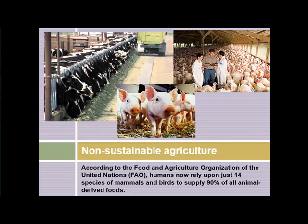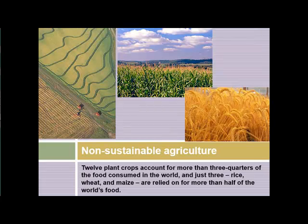This concentration of plant and animal dietary items means that just 14 species of animals and birds supply 90% of the human diet of animal-derived foods. Similarly, in plant culture, 12 crops account for more than three-quarters of the world's diet, and just three of them — corn, rice, and wheat — supply more than half of the total amount of food consumed in the world.